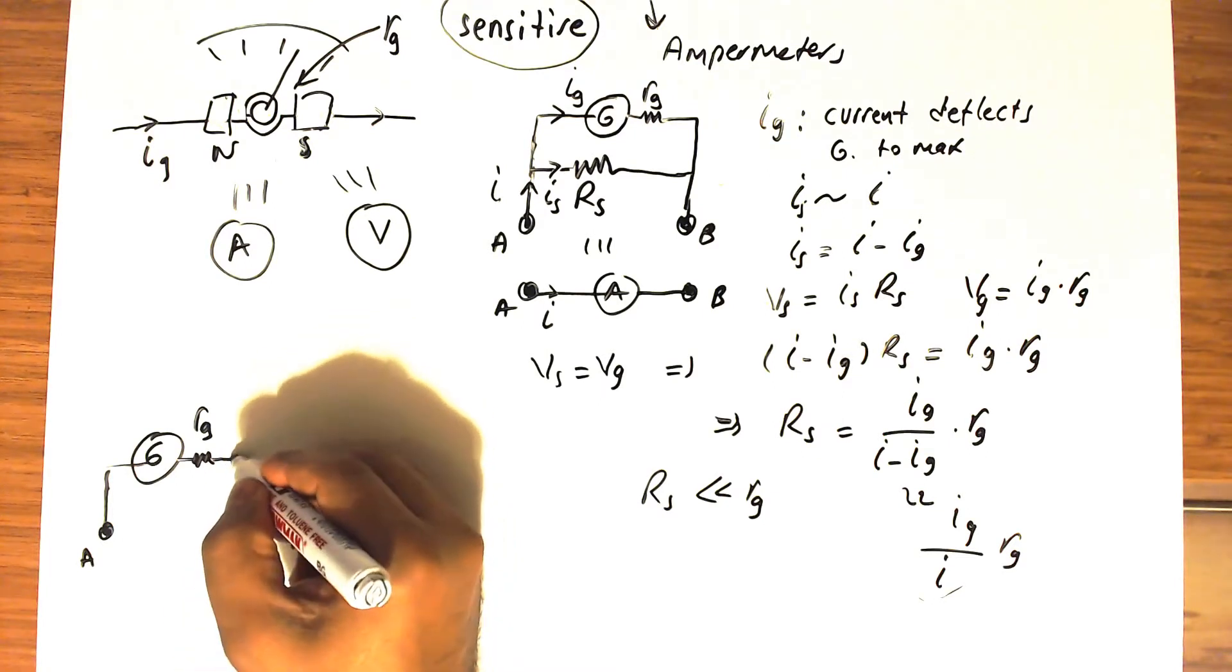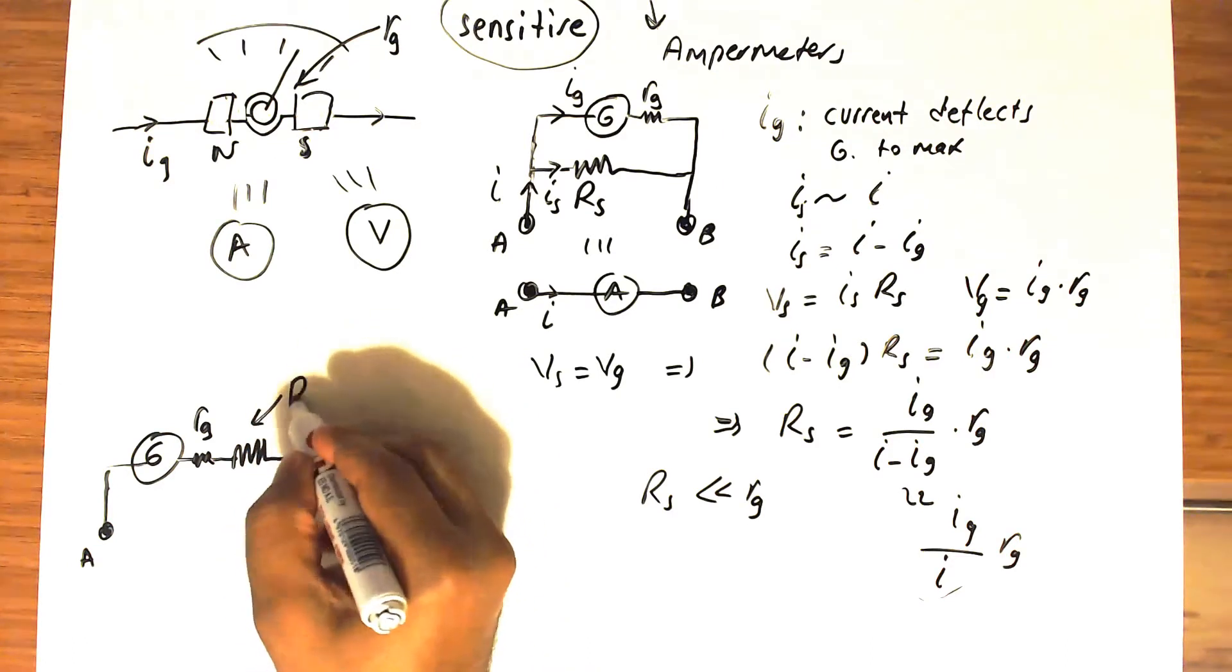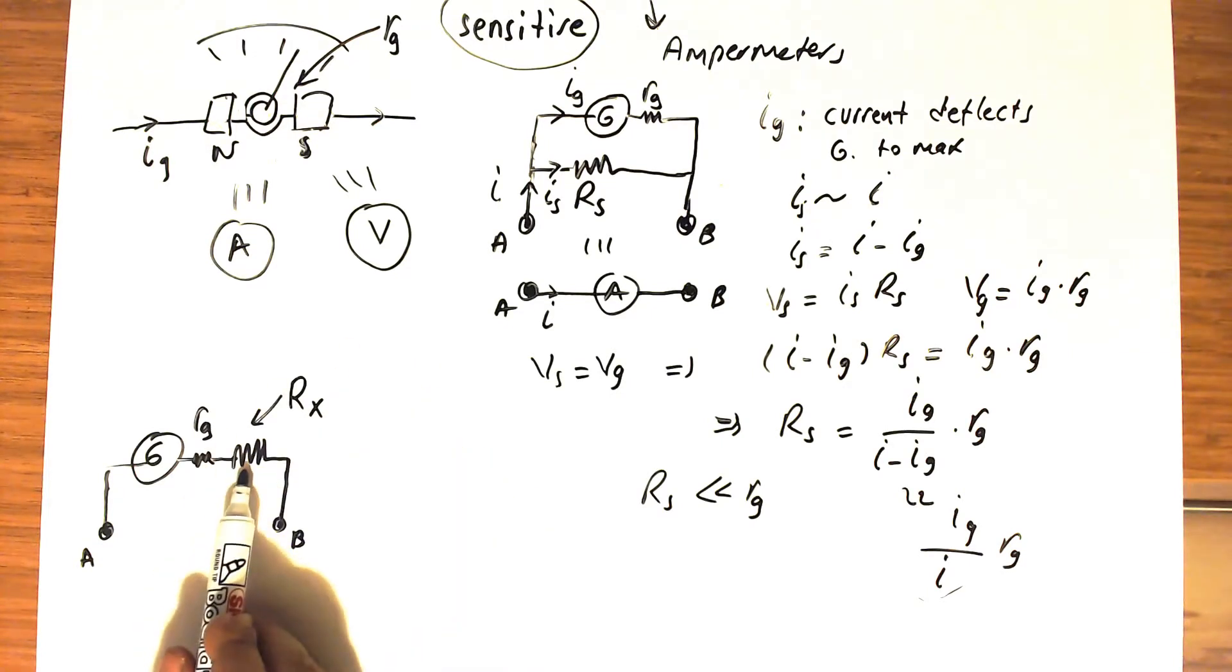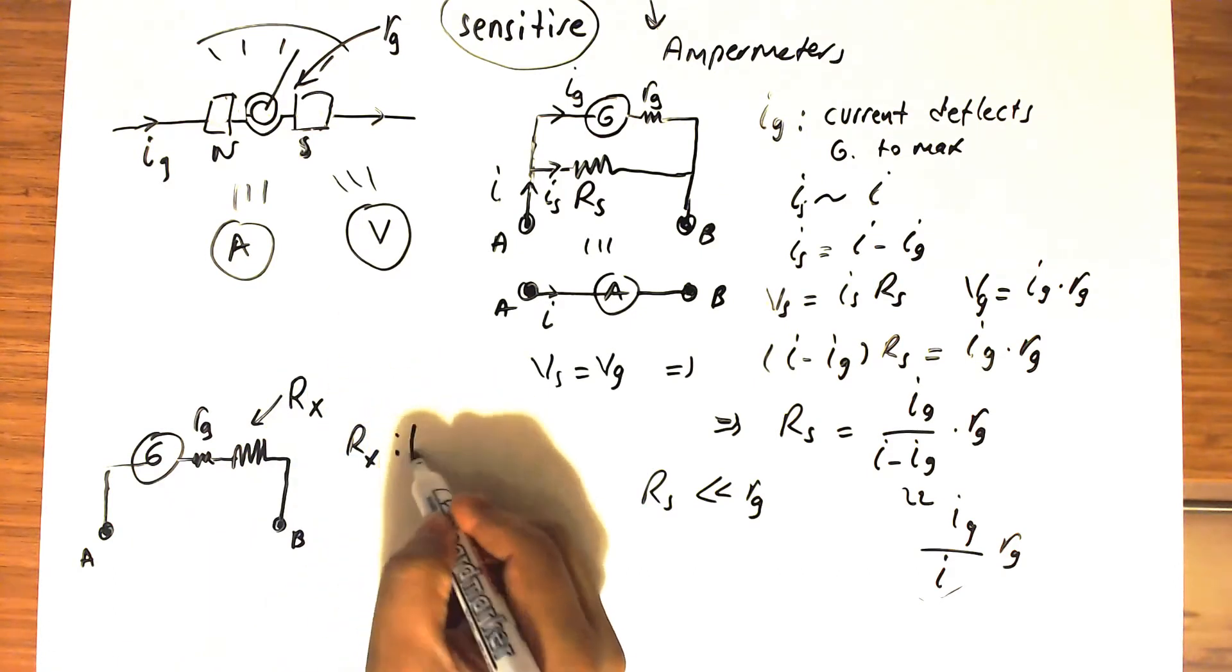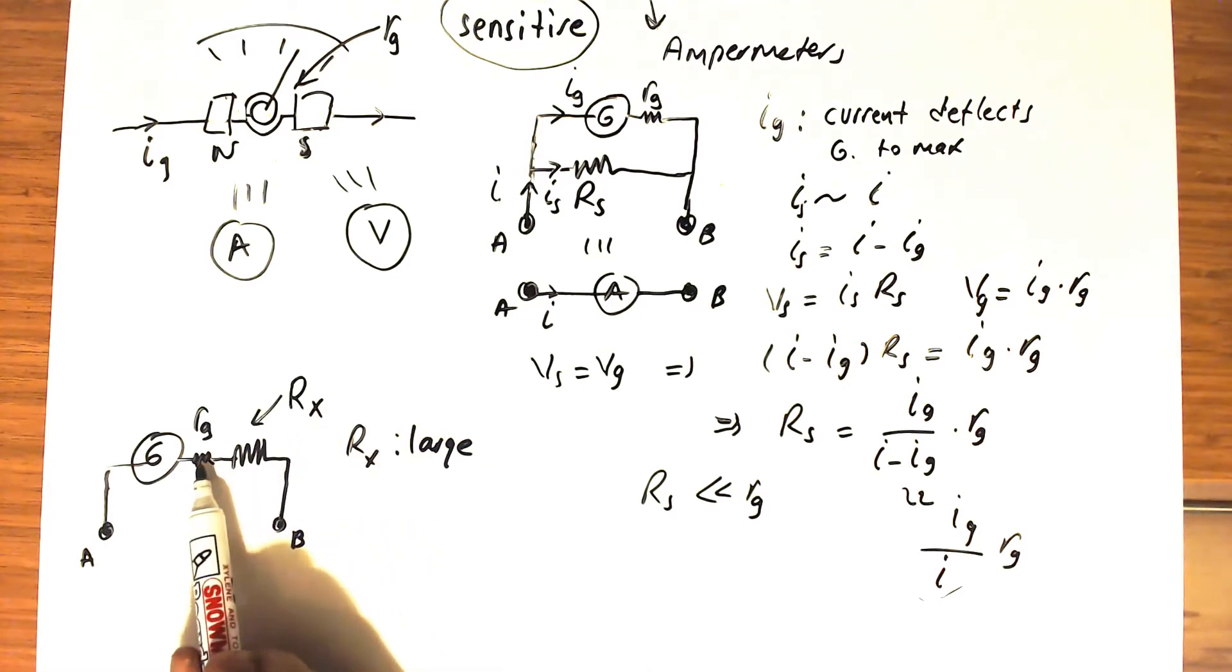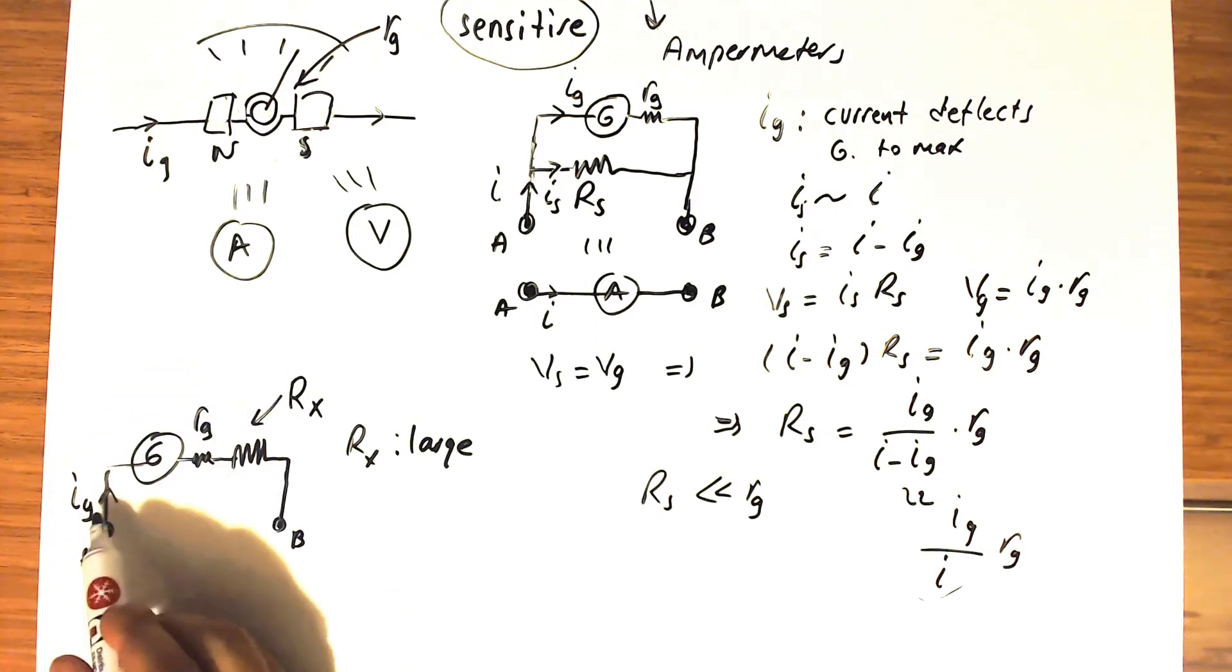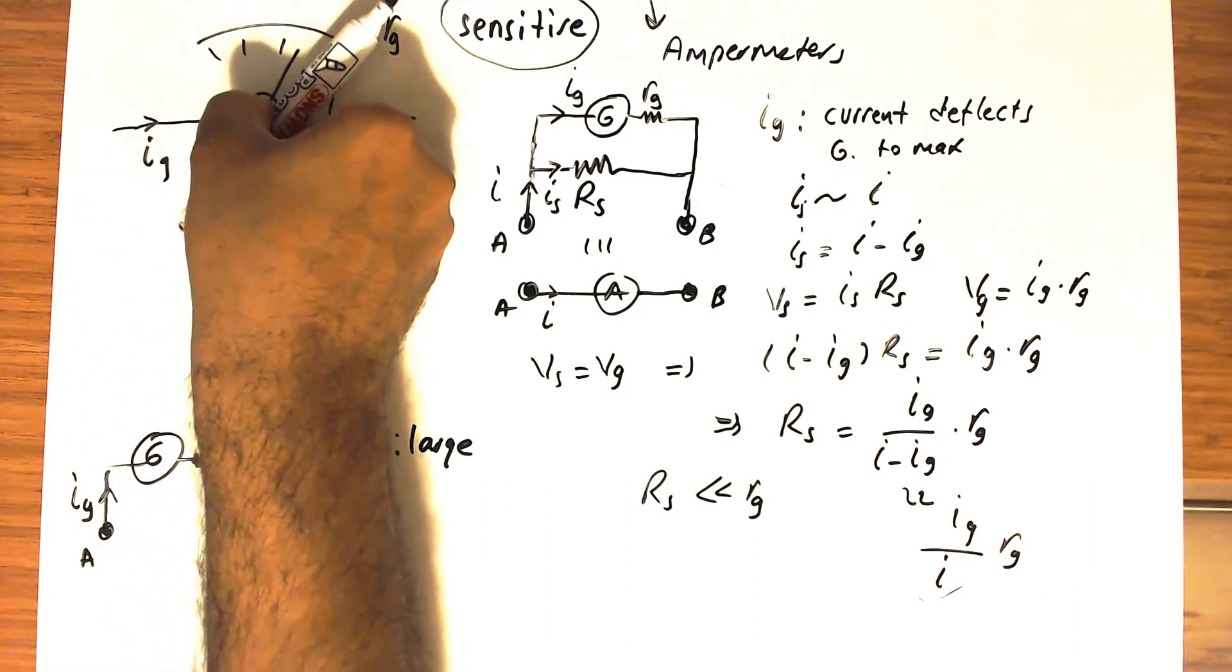We must use an auxiliary resistance, which we call Rx. This auxiliary resistance is in series with the galvanometer, and Rx is usually very large, much larger than the internal resistance of the galvanometer, because this current IG deflects the galvanometer to the maximum position.